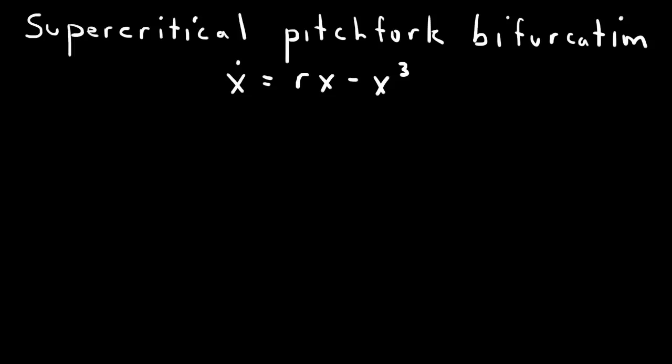Here I want to analyze a supercritical pitchfork bifurcation. The normal form for the supercritical pitchfork bifurcation is x-dot, dx/dt, equals rx minus x cubed.